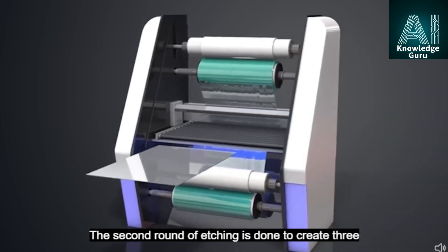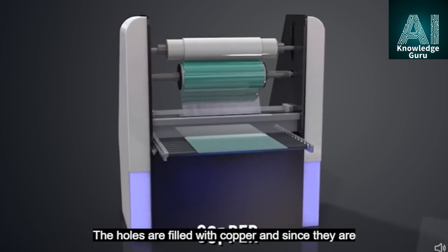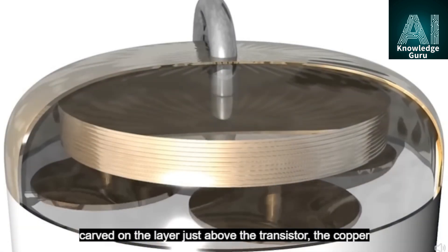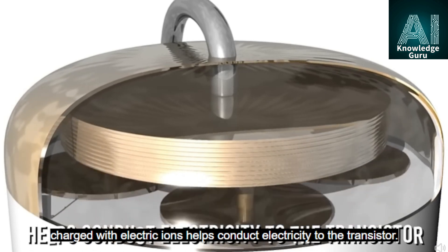The second round of etching is done to create three holes on the surface of the wafer. The holes are filled with copper and since they are carved on the layer just above the transistor, the copper charged with electric ions helps conduct electricity to the transistor.